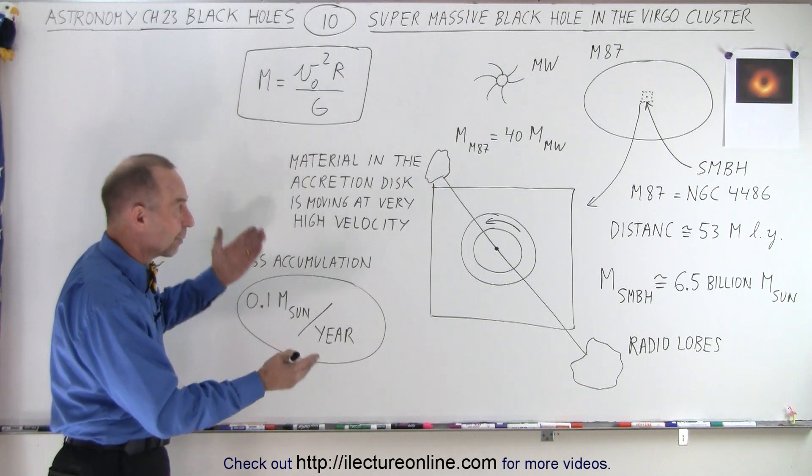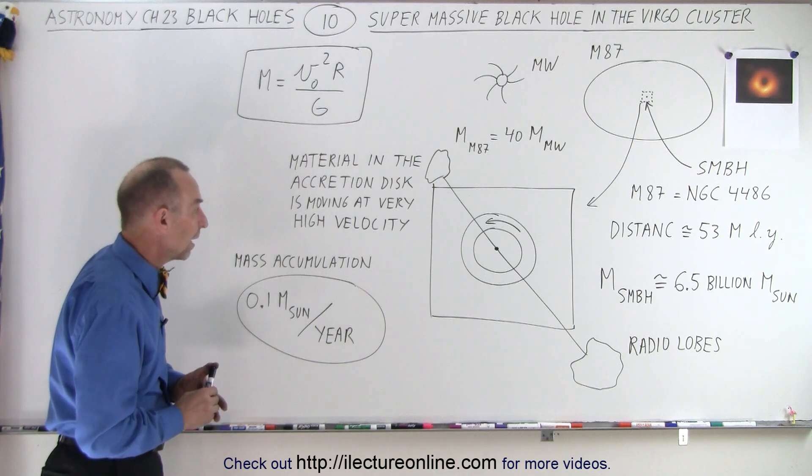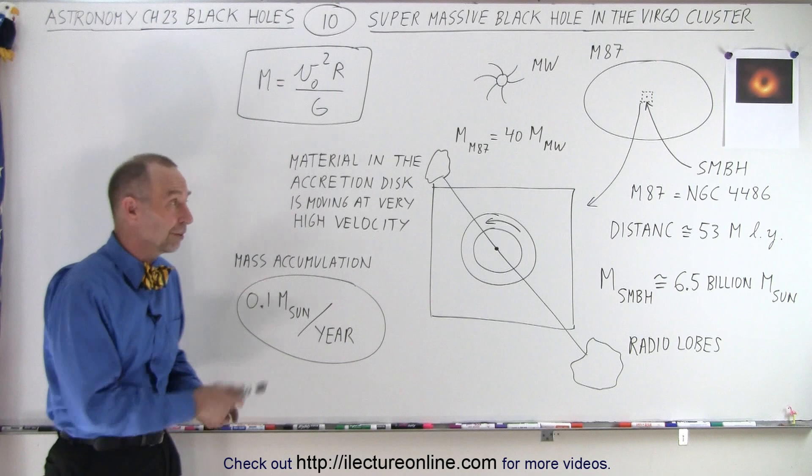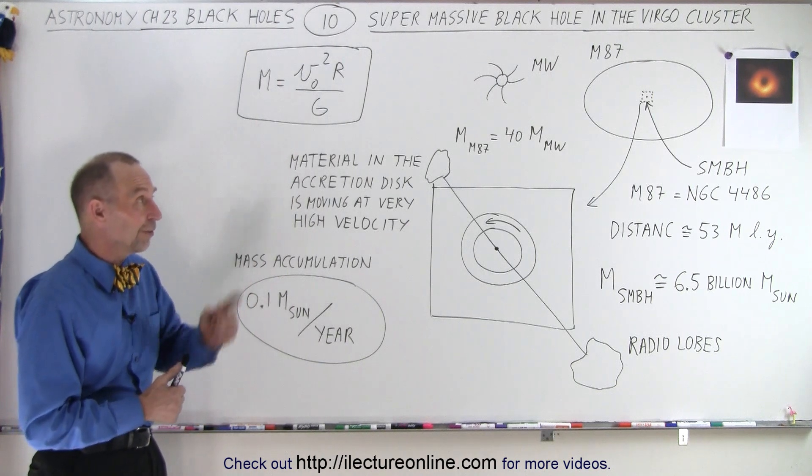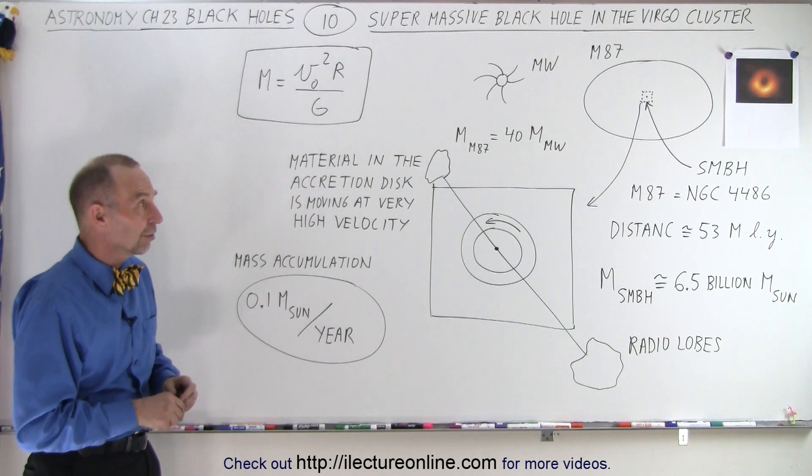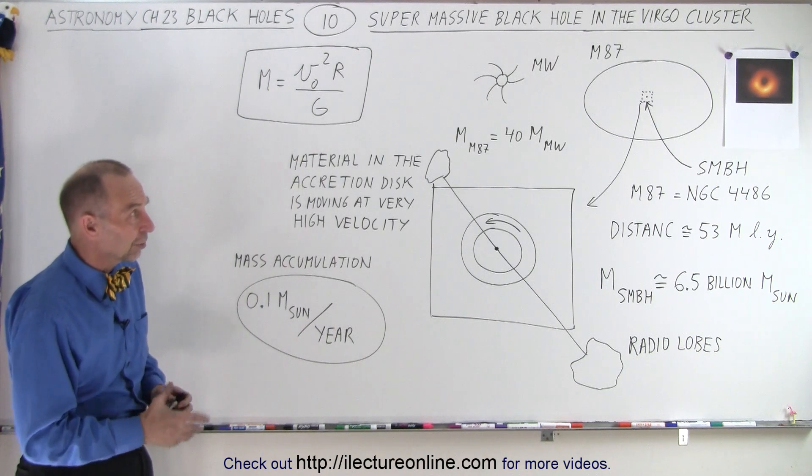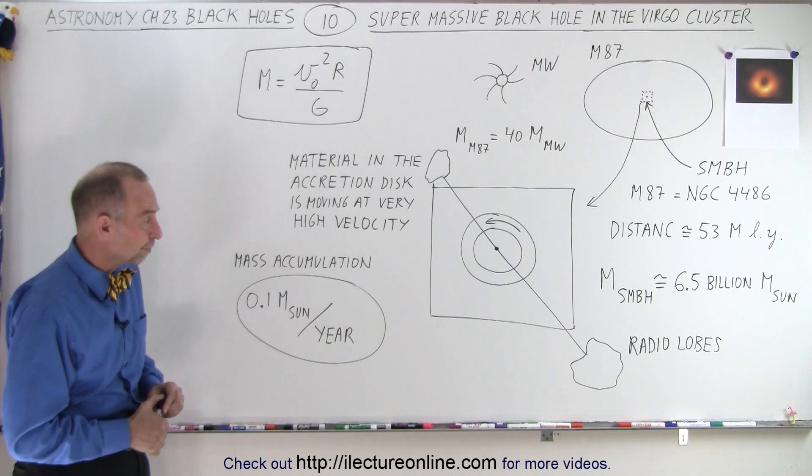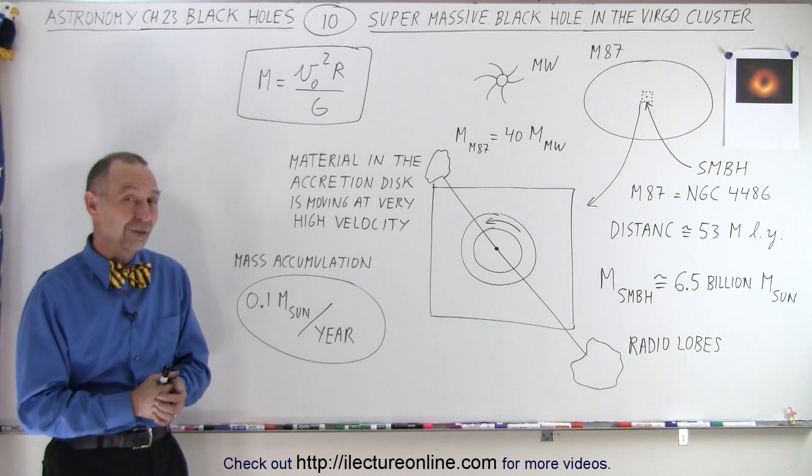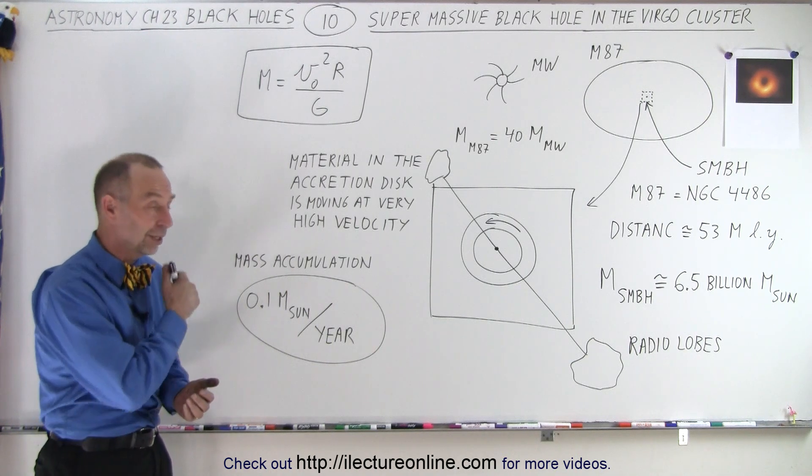So it's still active, it has the radio lobes, it has the accretion disk, and we're able to actually take a picture of it. That was quite a feat using the special techniques, interferometry, with some very big telescopes to get that incredible picture. So there you can see there are some very big black holes in our universe.